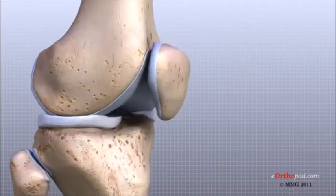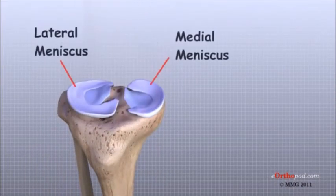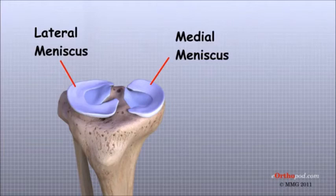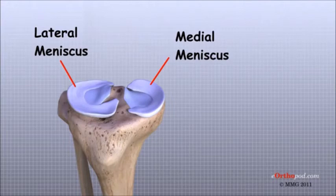Two special types of ligaments, called menisci, sit between the femur and the tibia. These structures are sometimes referred to as the cartilages of the knee, but the menisci differ from the articular cartilage that covers the surface of the joint. The two menisci of the knee are important for two reasons: they work like a gasket to spread the force from the weight of the body over a larger area, and they help the ligaments with stability of the knee.